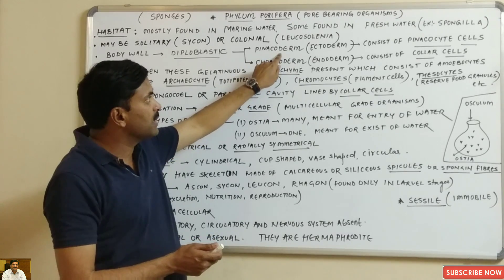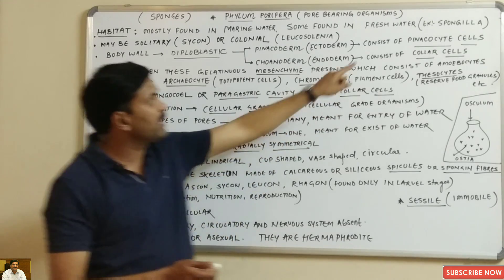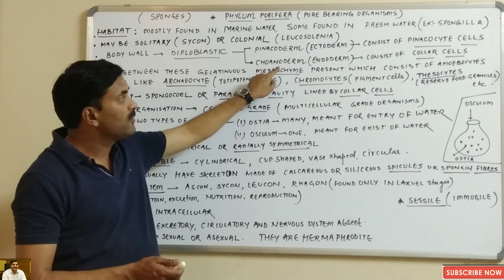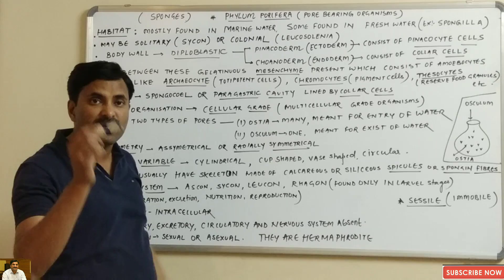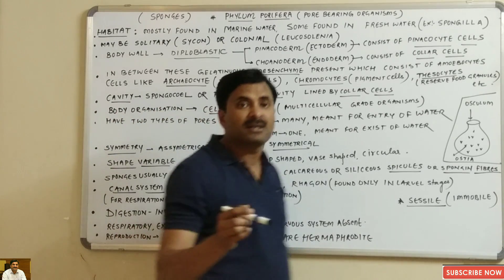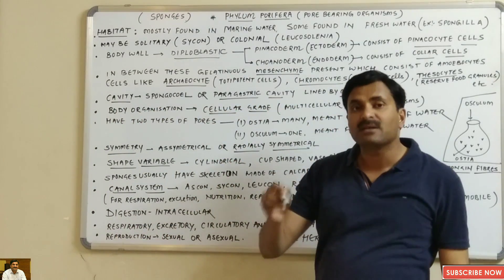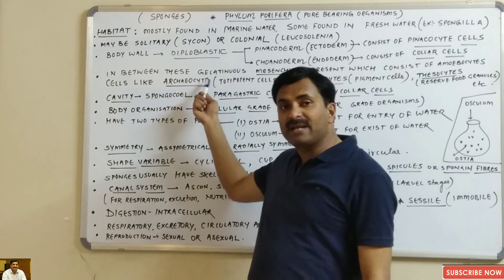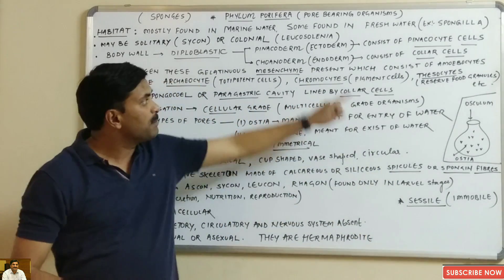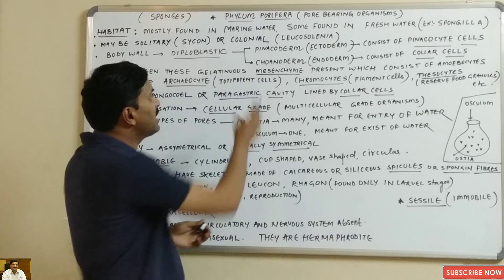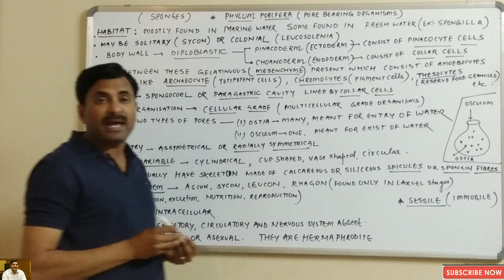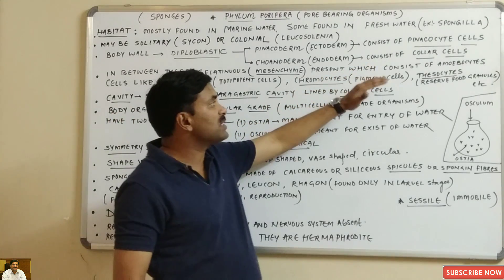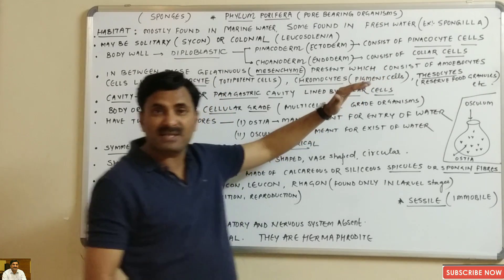The pinacoderm consists of special cells known as pinacocyte cells, and the choanoderm consists of special cells known as choanocyte cells. In between these two layers — the pinacoderm and the choanoderm — a gelatinous layer is also present, and this gelatinous layer is named mesenchyme. The mesenchyme consists of special cells called amoebocyte cells.